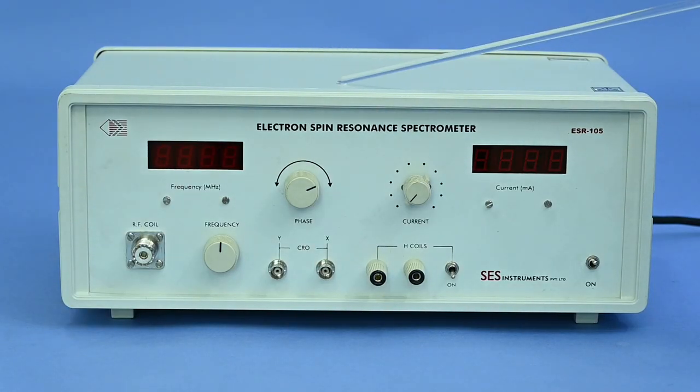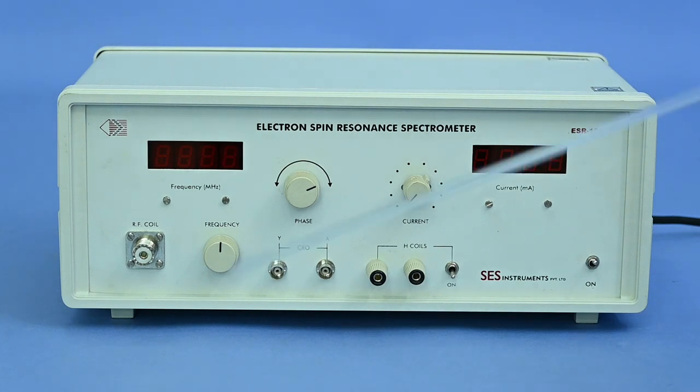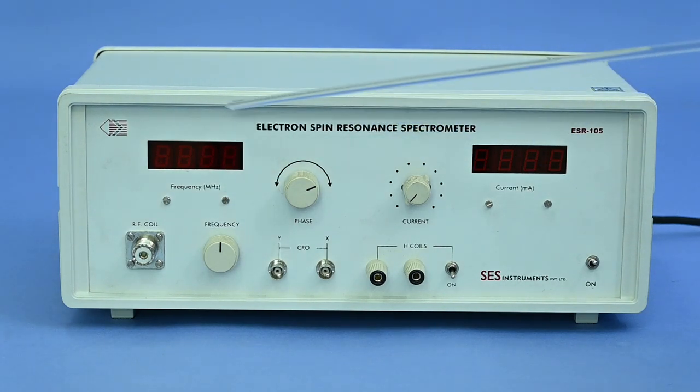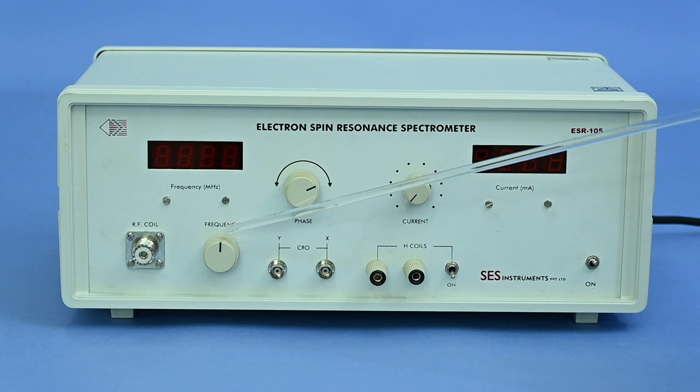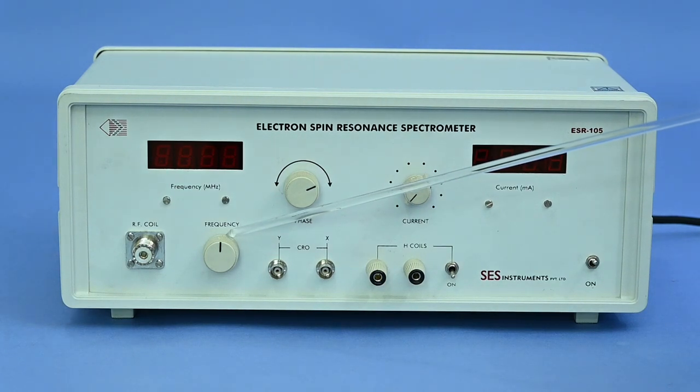The ESR main unit consists of a marginal radio frequency oscillator having a frequency range of 12-16 MHz with smooth variations.